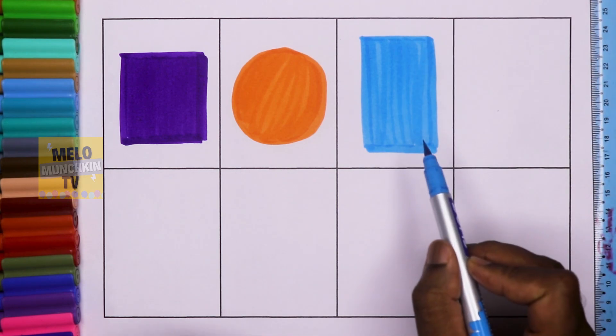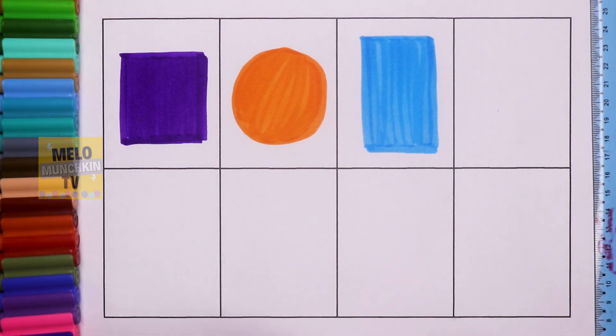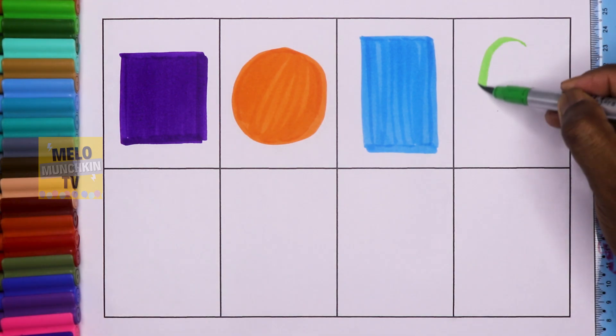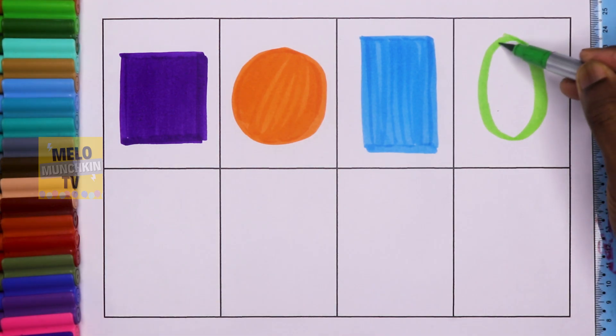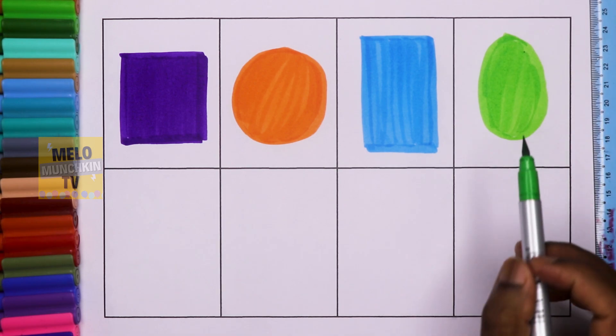So this is rectangle. Next I'll take green color to draw an oval like this. So this is oval.